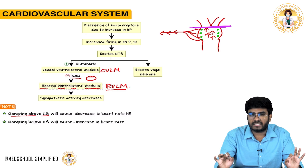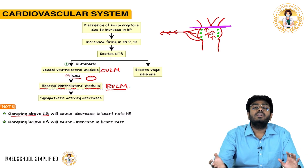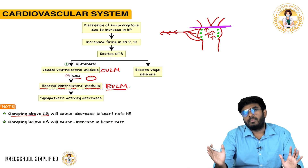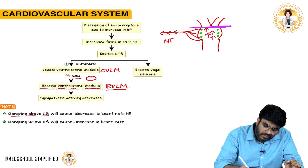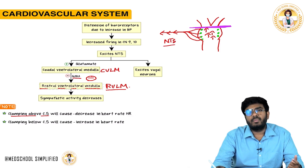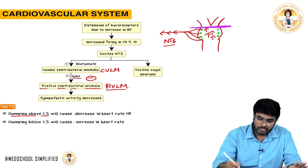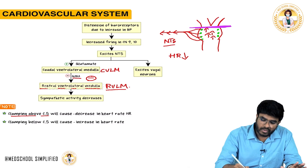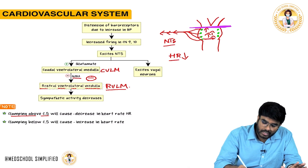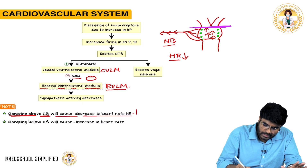We are artificially creating a situation that mimics high BP. The nucleus of tractus solitarius activates the CVLM, CVLM inhibits the RVLM, sympathetic nervous system is inhibited, and heart rate comes down. So clamping above the carotid sinus causes a decrease in heart rate.